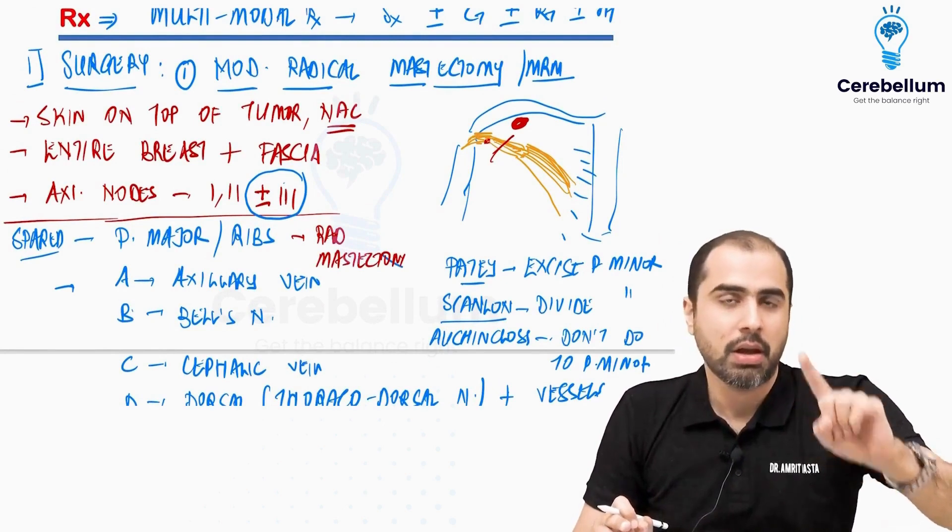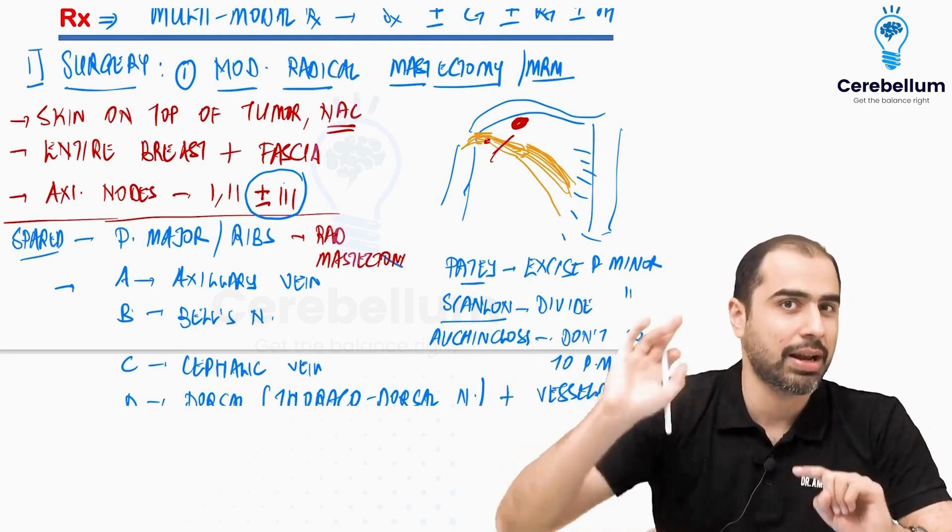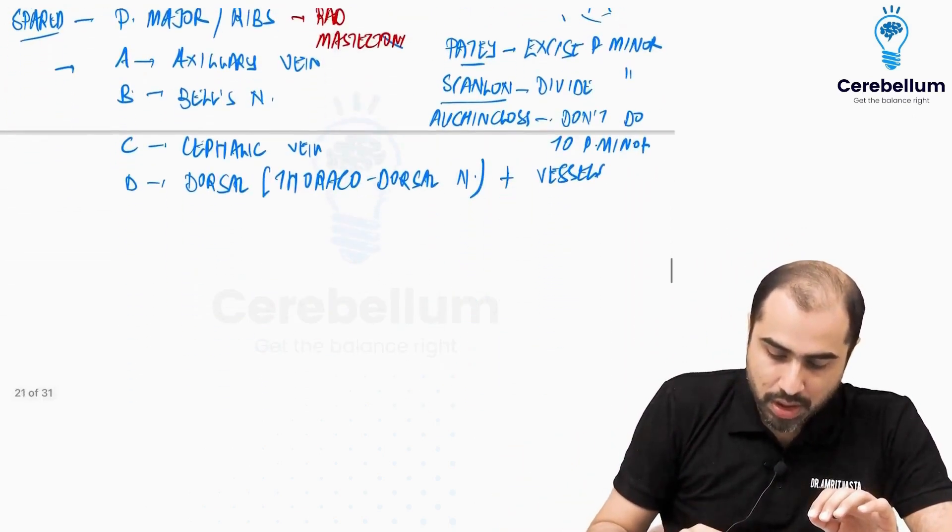That's why it's not mandatory to remove pec minor. But yeah, pec major is spared. Pec major is what will differentiate modified radical from Halsted's radical mastectomy. So that is all you need to know about MRM.